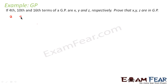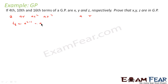The terms are a, ar, ar², ar³ — that is, the first term is a and r is the common ratio. So T4, the fourth term, is nothing but a·r^(4−1), that is ar³.